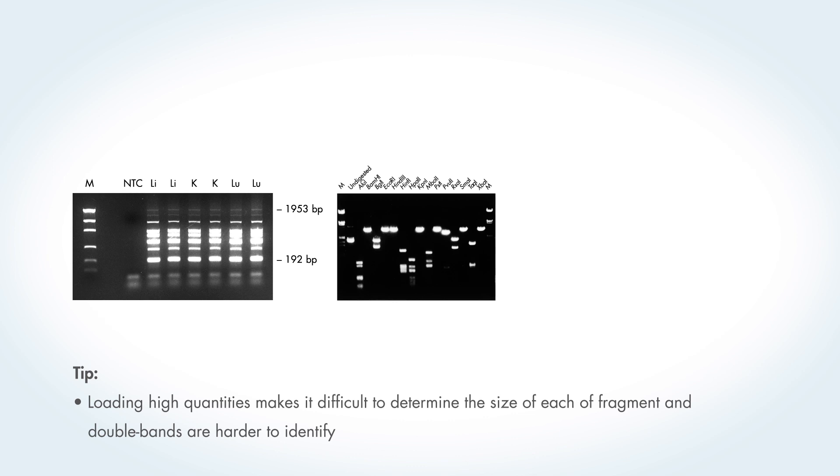Clearly the bands in the marker lane, labelled M, are higher up in the gel than the bands in the sample lanes. So they're not a lot of use when estimating the size of the sample bands. Moreover, there are only a few bands in the marker lane. A good marker should have more bands than this to cover a range of sizes.